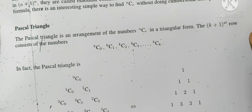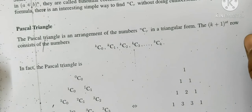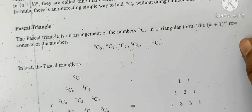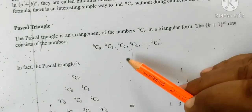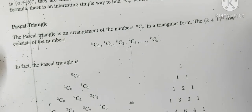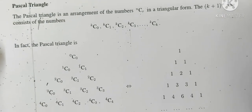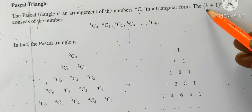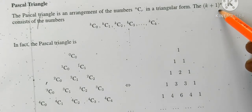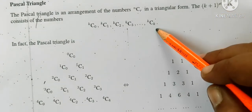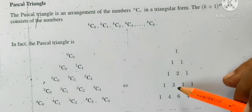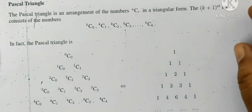This is a triangle formula. In this row, we call that binomial coefficients as an arrangement. This is K plus 1th row inside the triangle. This is a rule.